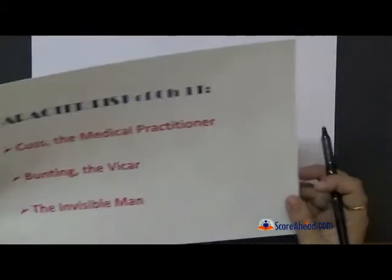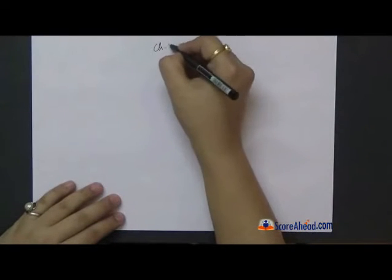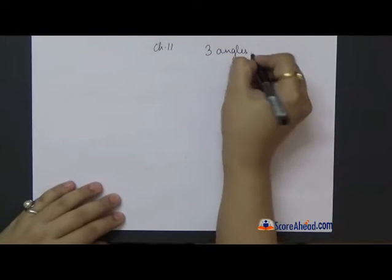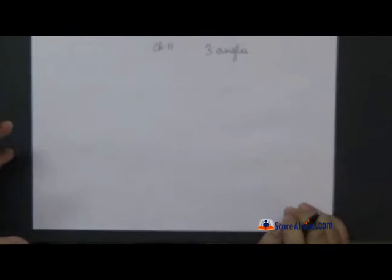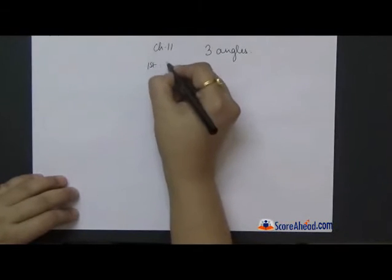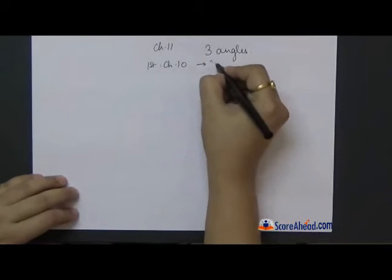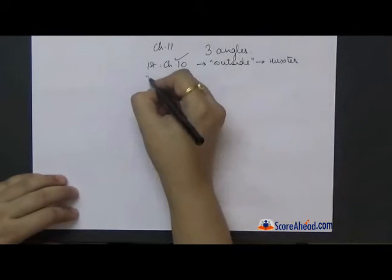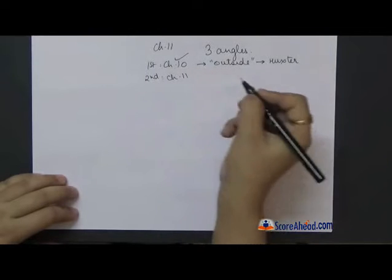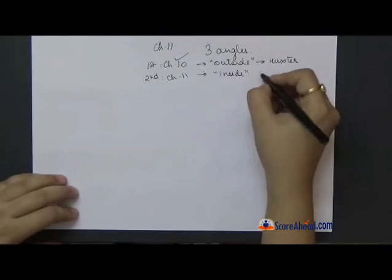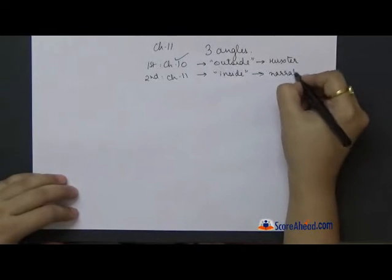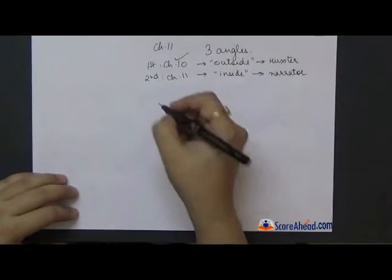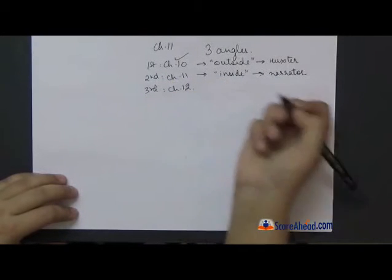We will first discuss before we begin with chapter number 11. I have already told you and I repeat, there are three angles through which this one episode is seen. The first angle we have done in chapter number 10 - it is like an outside view from the eyes of Huckster. The second we are going to do now in chapter number 11, it is like an inside view from the eyes of the narrator who is the author, and there is a third which is going to be in chapter number 12.